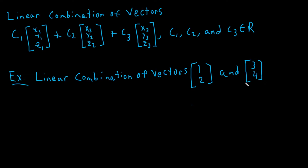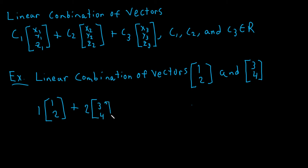We can find a linear combination of any set of vectors as long as they have the same dimension. For example, with the vectors 1, 2 and 3, 4, I'll find the linear combination where c1 equals 1 and c2 equals 2. We multiply and add: 1 times 1 plus 2 times 3 gives 7, and 1 times 2 plus 2 times 4 gives 10. So the vector 7, 10 is a linear combination of the vectors 1, 2 and 3, 4.